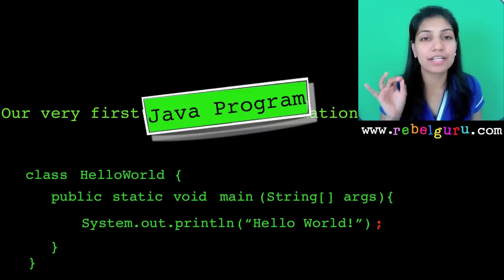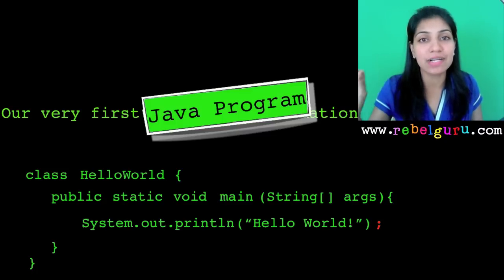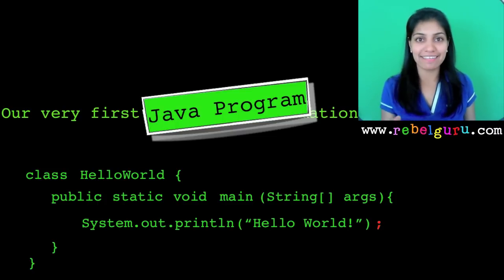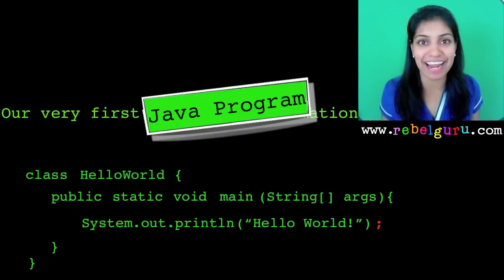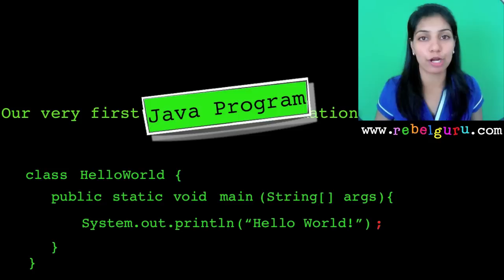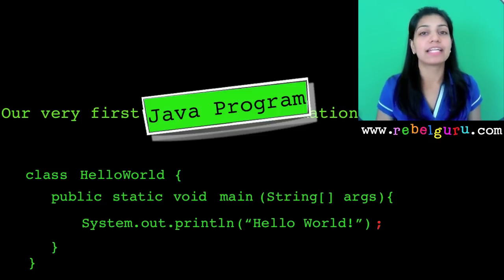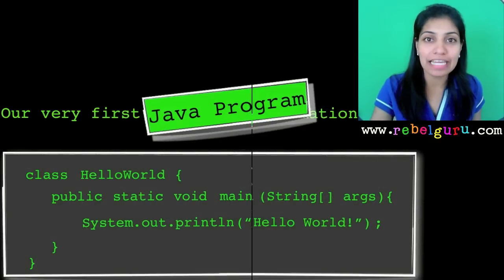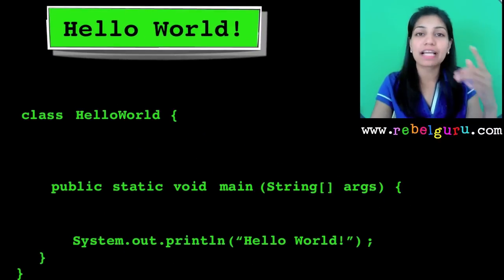Finally, there is a semicolon at the end. Many students tend to forget this, but always remember — all Java statements end with a semicolon. Make it a habit to write a semicolon after all your statements. Teachers have a bad habit of cutting marks when the semicolon is not present, and you tend to lose a lot of marks because of that. Semicolon is a must.